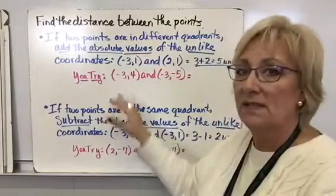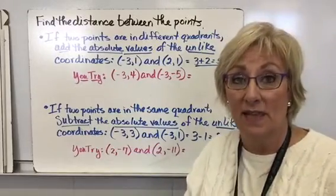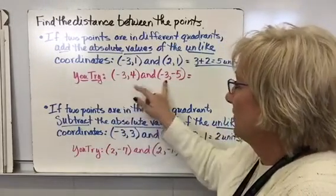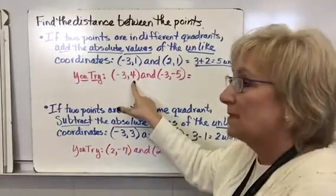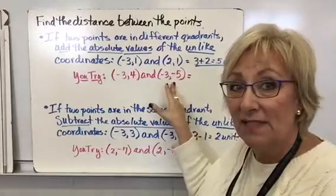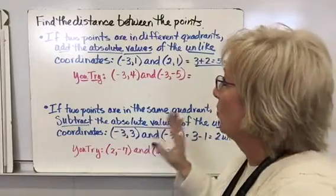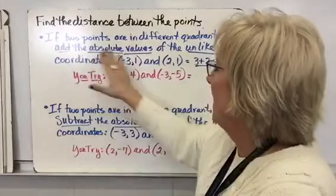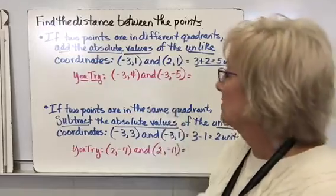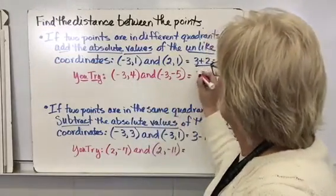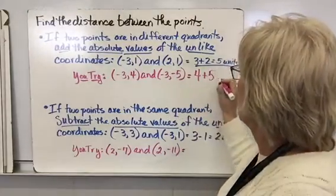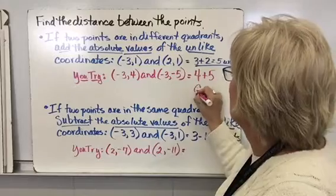Try the next one yourself and come back to check. Here I've got (-3, 4) and (-3, -5). The x values are the same — both negative three — so I add the absolute values of the unlike y values. The absolute value of four is four, and the absolute value of negative five is five. Four plus five equals nine units.